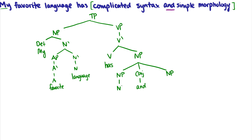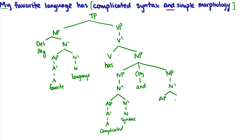So 'complicated syntax': there's no specifier. 'Complicated' is an adjective phrase and also an adjunct — daughter of N-bar, sister of N-bar. Then A, 'complicated.' And finally, 'syntax' is the head noun for this conjunct. For 'simple morphology,' it will look exactly the same: 'simple' is an adjective phrase modifying the noun 'morphology,' and 'morphology' is the head noun.